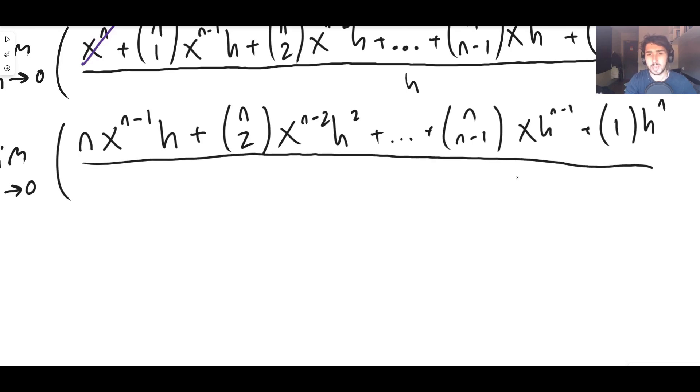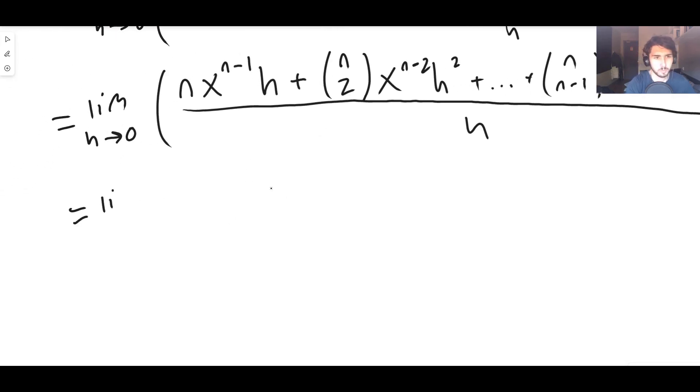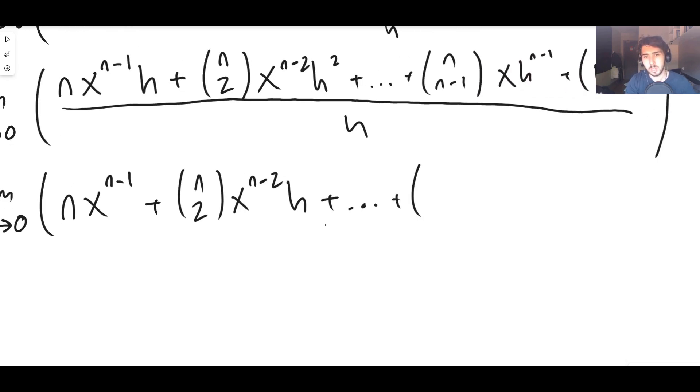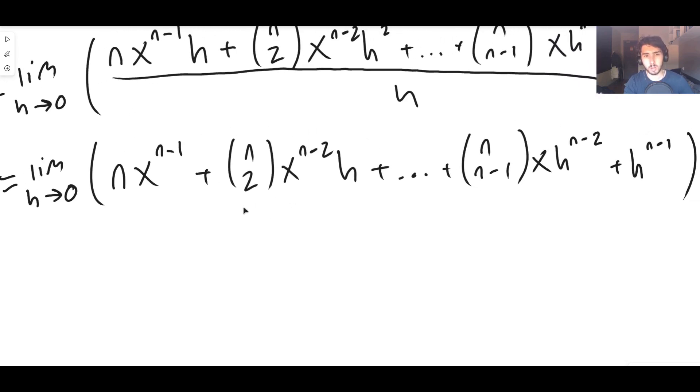When we divide this by h, I'm actually going to do the division now. I'm going to stop writing over h and literally just take out one power of h from every single point here. So the limit as h goes to zero of n x to the n minus one, h divided by h is just one, plus n choose two x to the n minus two, it was h squared, now it's just h to the one, plus a bunch of other terms that also have multiple powers of h in them, plus n choose n minus one x multiplied by h to the power of n minus two, plus h to the n minus one.